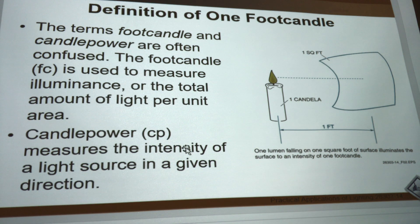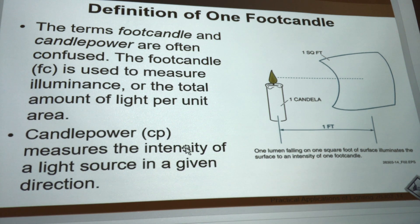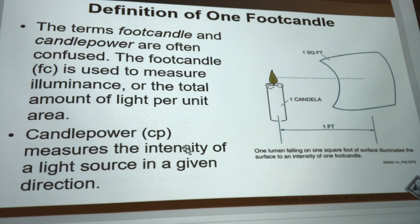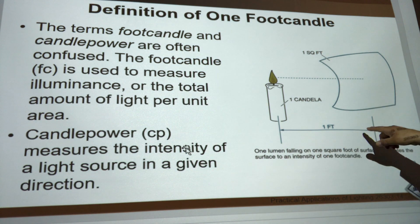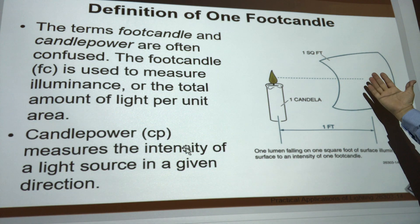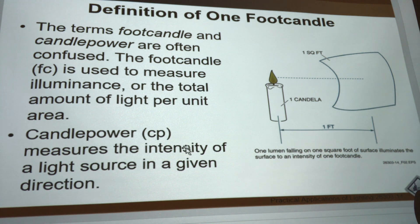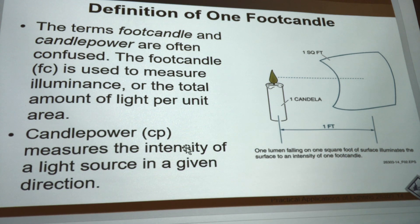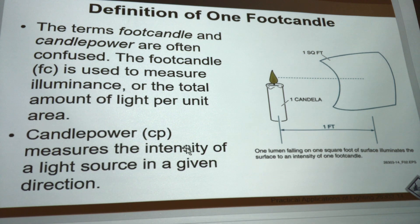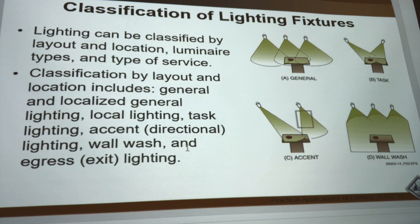Here's the definition of foot candle. The term foot candle and candle power are often confused. A foot candle (FC) is used to measure lumens, or the total amount of light per unit area. One square foot, one foot away — that's how much light we get on a desktop. That's foot candles, and it's really important when we work in an office, studio, or operating room — we have to have a certain amount of foot candles on our subjects.